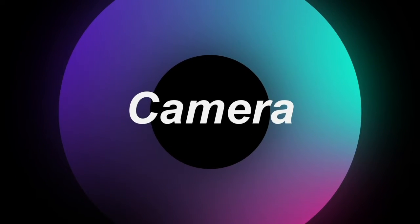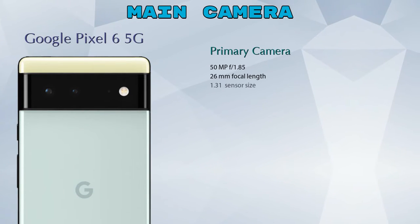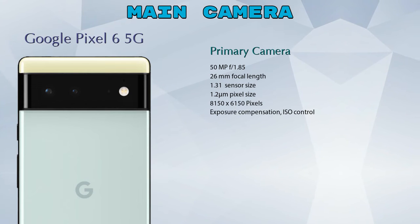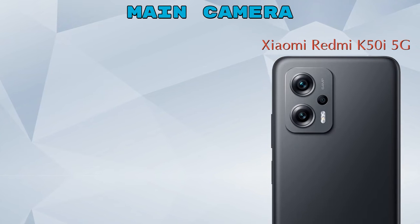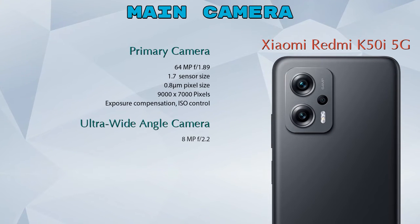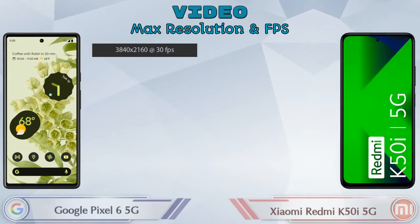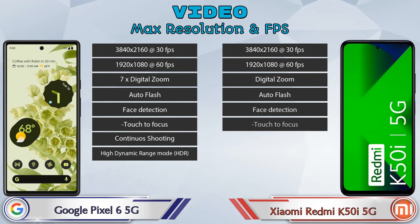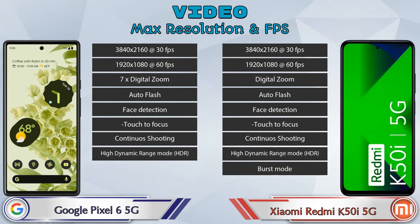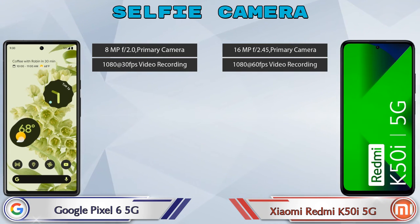Now let's see the detail about our favorite feature: camera. For the rear camera, Pixel 6 5G has two cameras — a primary camera and an ultra-wide angle camera. Redmi K50i 5G has three cameras — a primary camera, an ultra-wide angle camera, and a macro camera. For video, Pixel 6 5G has 8 and Redmi K50i 5G has 9 different types of features available. For the front selfie camera, both phones have a single camera with two different features available.